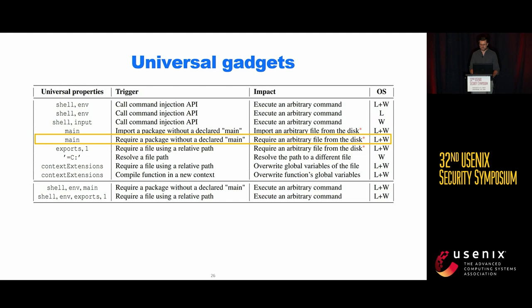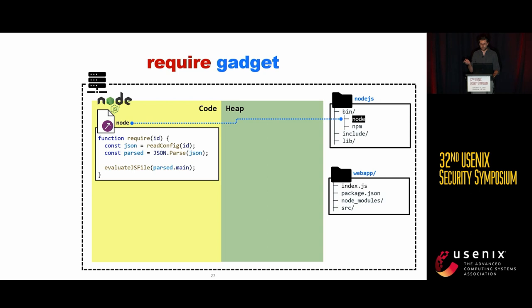The second gadget is the require function, used to include external packages in an application. This is a simple snippet of the require function. As we can see, it reads the package configuration file and evaluates the entry point if it is defined in the property main. If main is undefined, Node.js uses a default value. Let's see how we can exploit this if the attacker pollutes the main property.